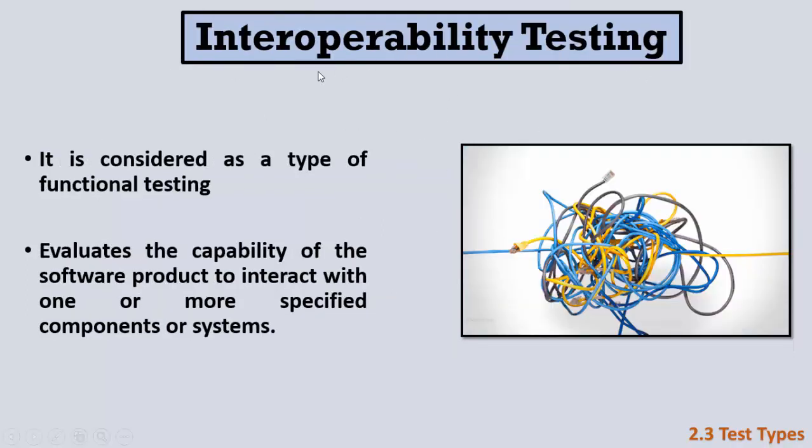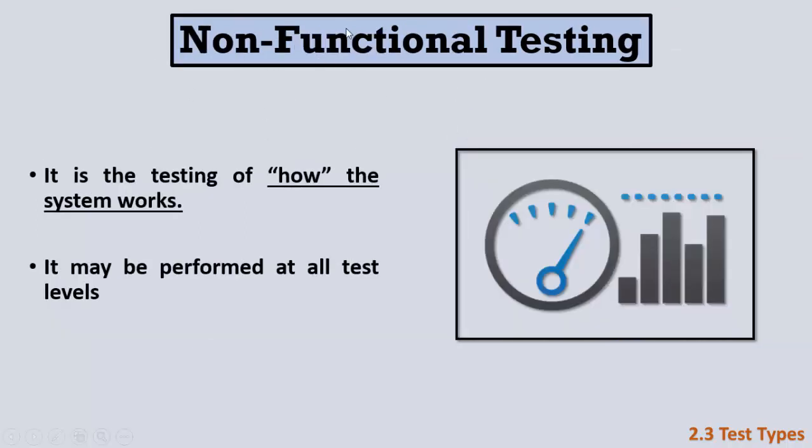The second type of functional testing is interoperability testing. This tests the capability of the software to interact with other components or systems. For example, an Android app's ability to connect to Wi-Fi, mobile data, share images through Bluetooth, Facebook Messenger, or WhatsApp — it tests the interface between a device and other nearby devices.